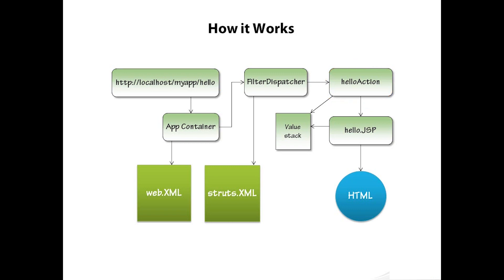That filter dispatcher is going to say: because your URL says myapp, I'm going to go to that application and see what hello is mapped to. It's mapped to the hello action class, so I'm going to call execute — or a particular method if you've specified one — on that hello action class and process that request. The hello action gains control and executes your business logic to properly handle the request. As part of doing that, it may use the value stack to store some intermediate data — for example, if the request contained an ID parameter, it might put that on the value stack so that it can access that data.